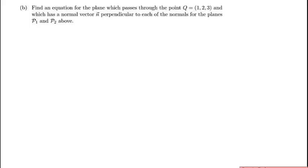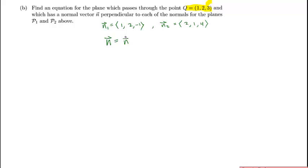The next part of the question asks us to find an equation for the plane which passes through the point Q = (1, 2, 3), and which has a normal vector n perpendicular to each of the normals for P1 and P2. The normal for P1 is (1, 2, −1) and for P2 is (2, 1, 4). We already found a vector perpendicular to both by taking their cross product: it's ⟨9, −6, −3⟩.